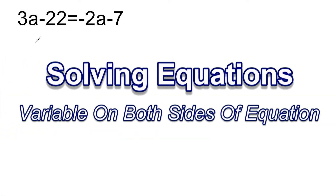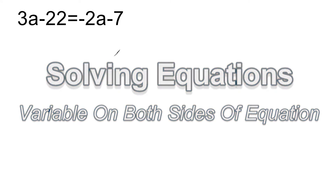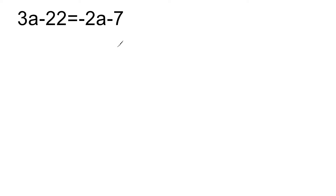We have the equation 3a minus 22 is equal to negative 2a minus 7. The first thing we want to do is see if there's anything we can simplify on the left-hand side or on the right-hand side. In this case, there is nothing to simplify because we cannot combine terms with variables with constants.